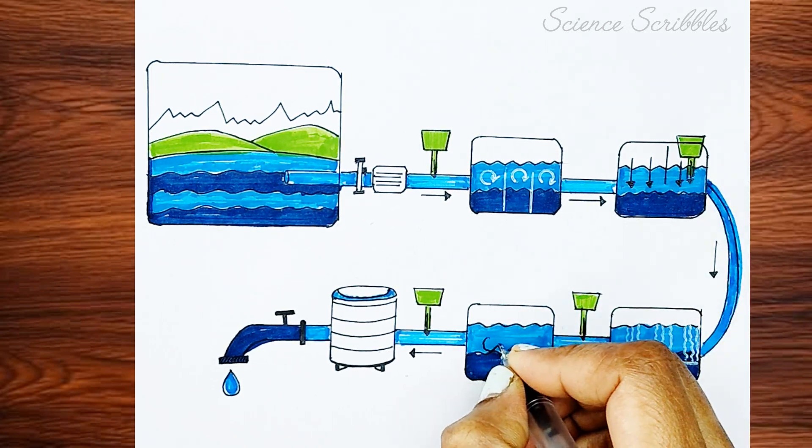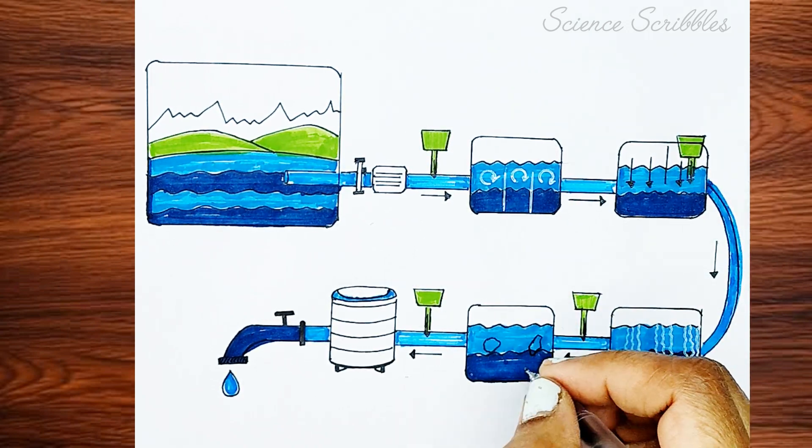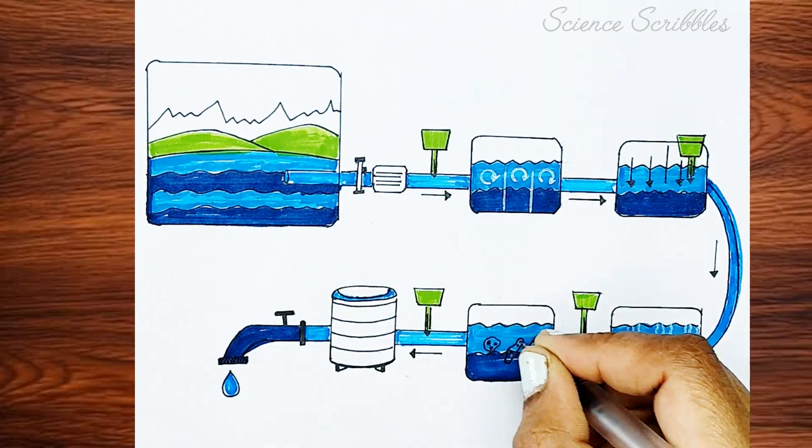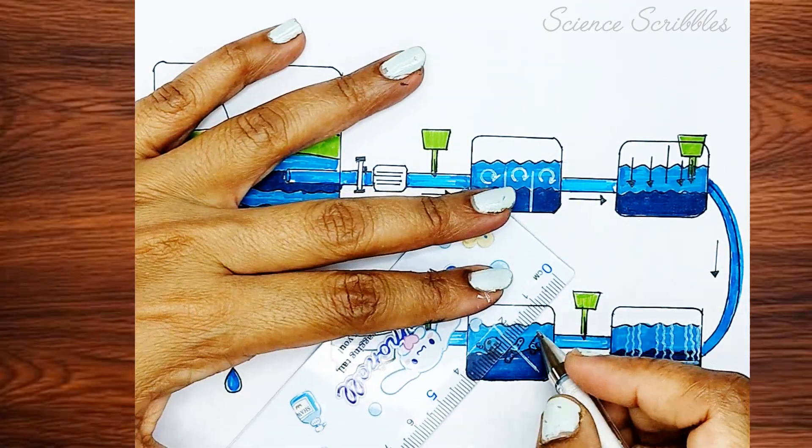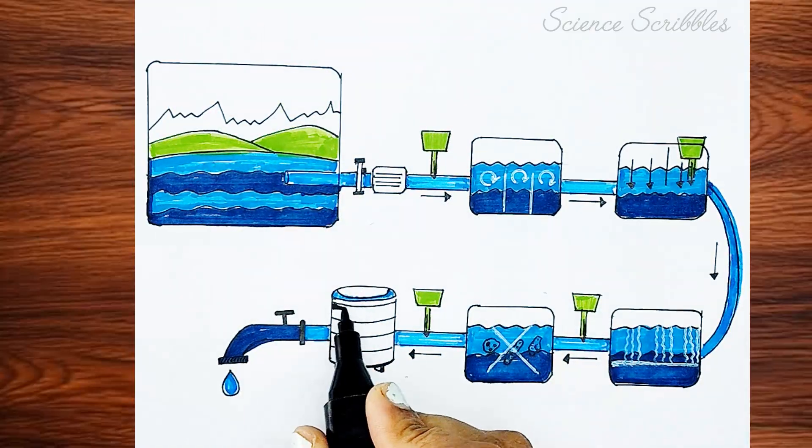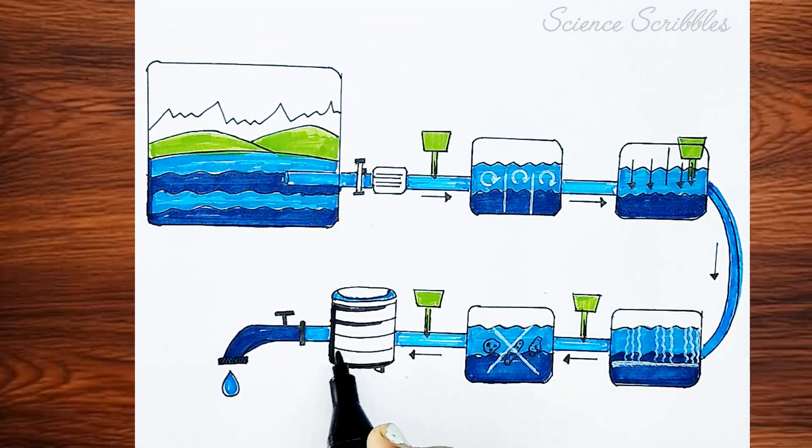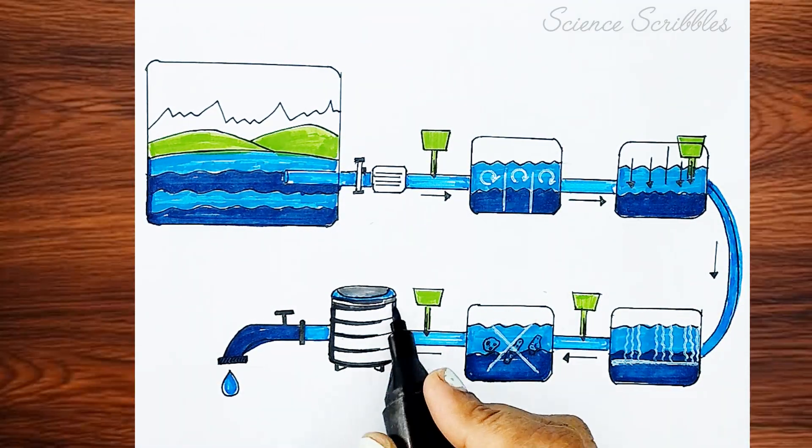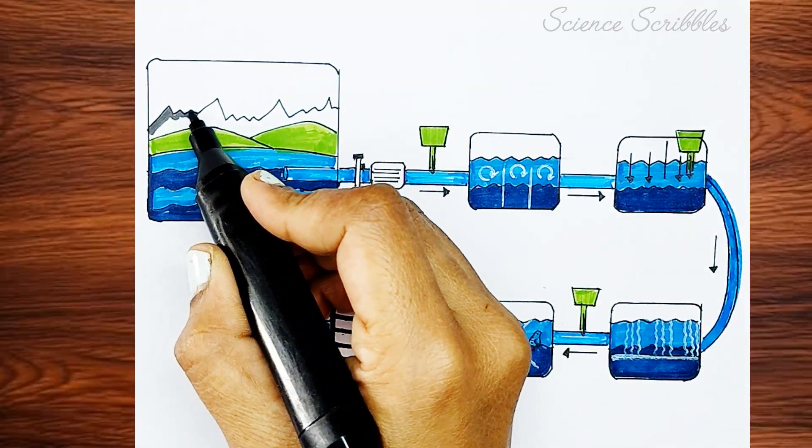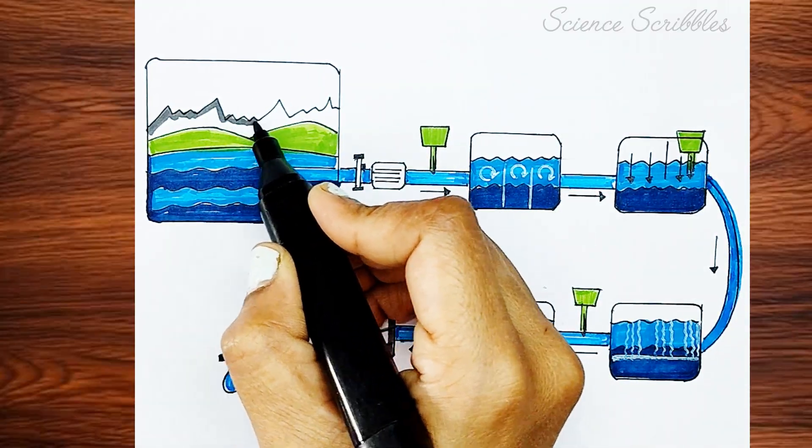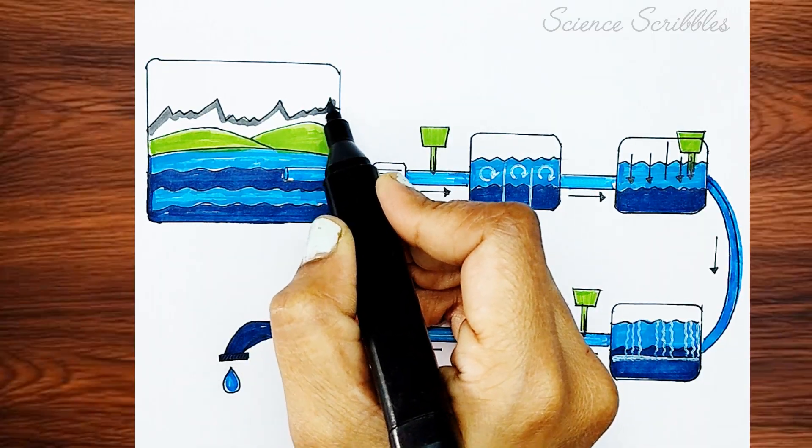In the fourth rectangle, I am adding irregular shapes to indicate the presence of bacteria and germs in the water. To show that the water is being cleaned in this process, I am using a white pen to strike them out. Kindly follow along. For the background, I am coloring the mountains with dark gray and using a blue pencil to make the sky look vibrant.